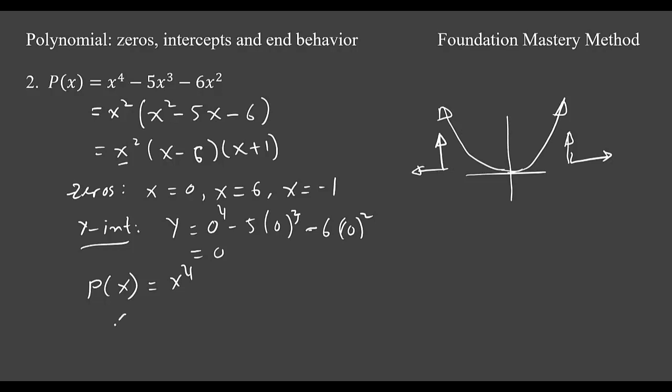So end behavior will be x goes to infinity, y goes to infinity. x goes to negative infinity, y goes to positive infinity. So just keep it in mind that if your polynomial is of degree even then it will go in the same direction. If it is odd then it will go in the opposite direction depending on leading coefficient. In this case our leading coefficient is 1.